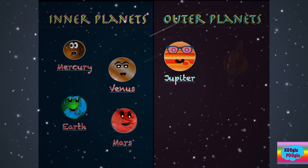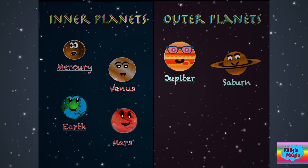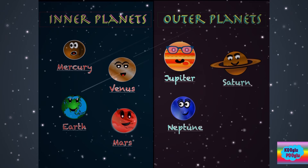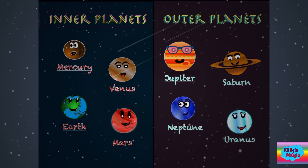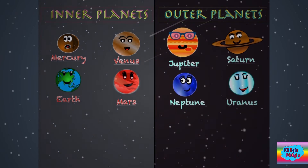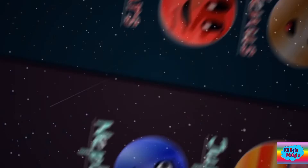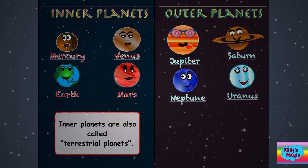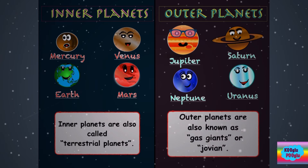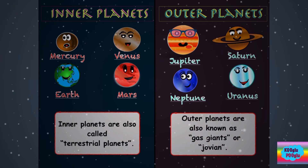Our outer planets are Jupiter, Saturn, Neptune, and Uranus. Let's learn how these two sets are different from each other. Inner planets are also called terrestrial planets, and outer planets are also known as gas giants or Jovian planets.